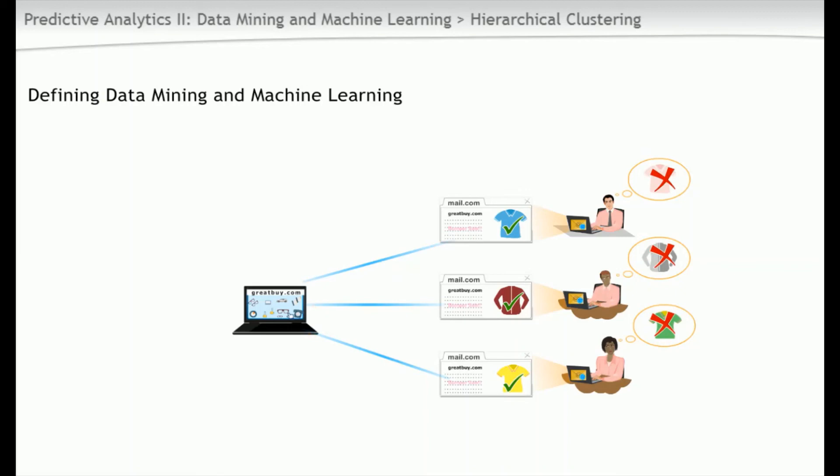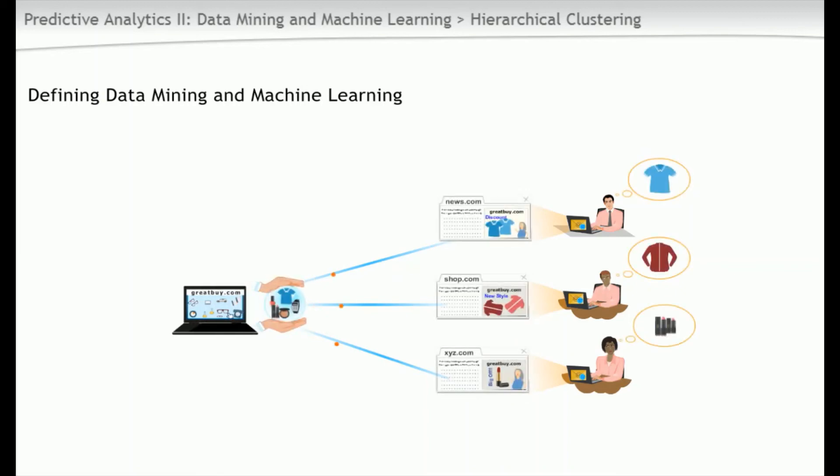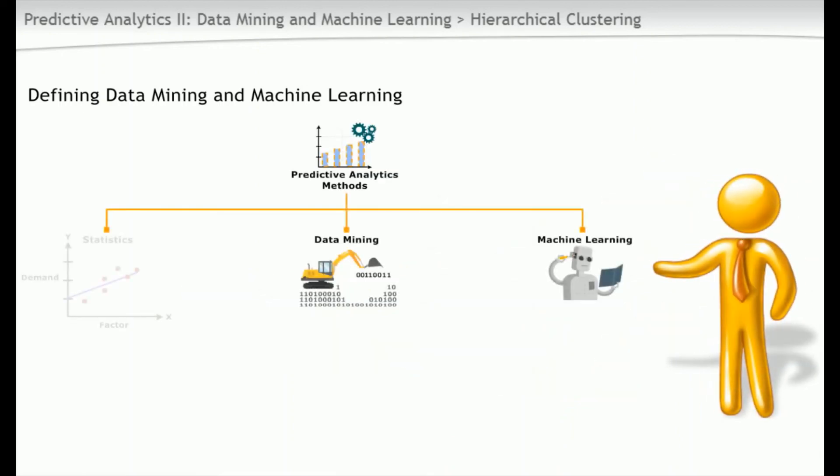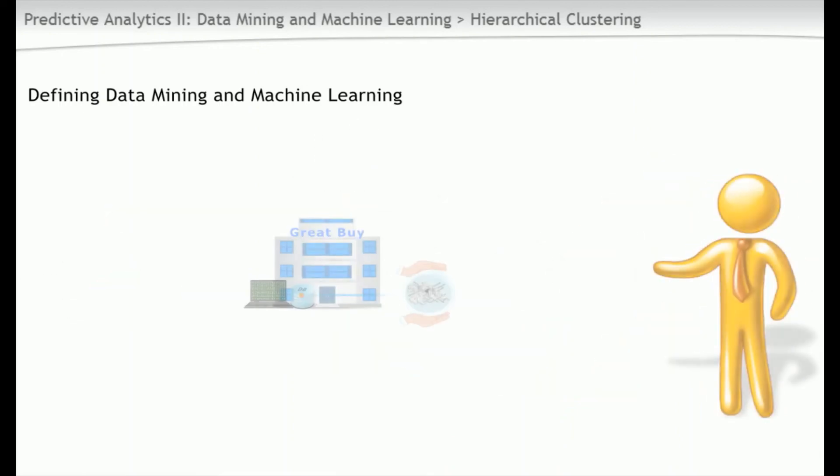Great. So we can become more efficient by targeting advertising of the right products to the right people. Daniel learns that data mining and machine learning are used to analyze large amounts of data to make predictions.